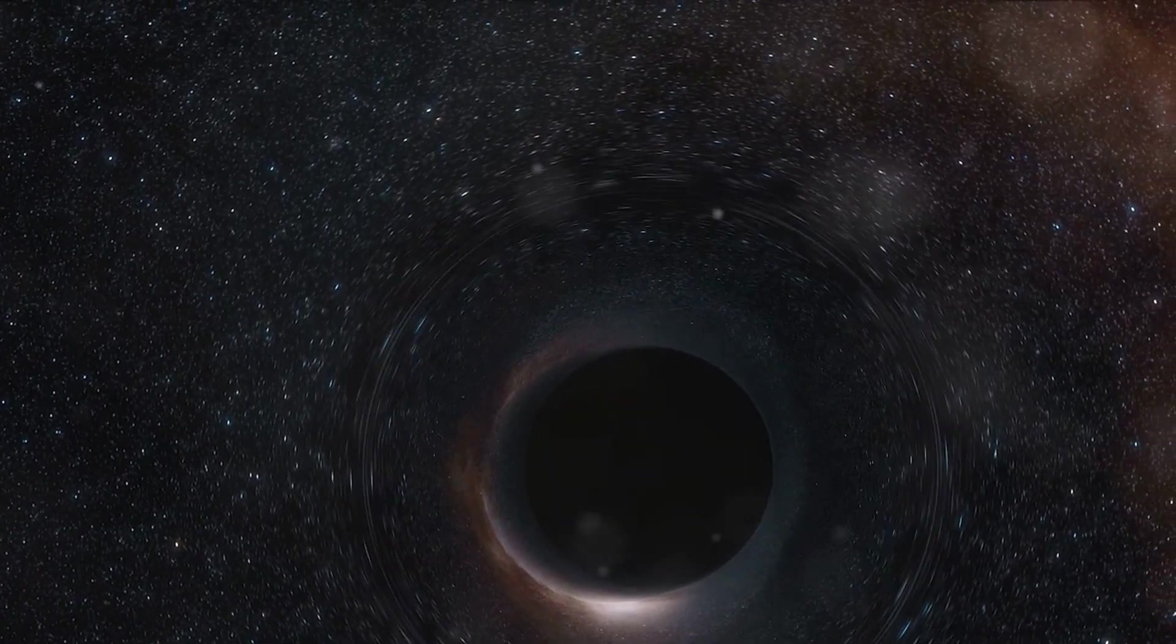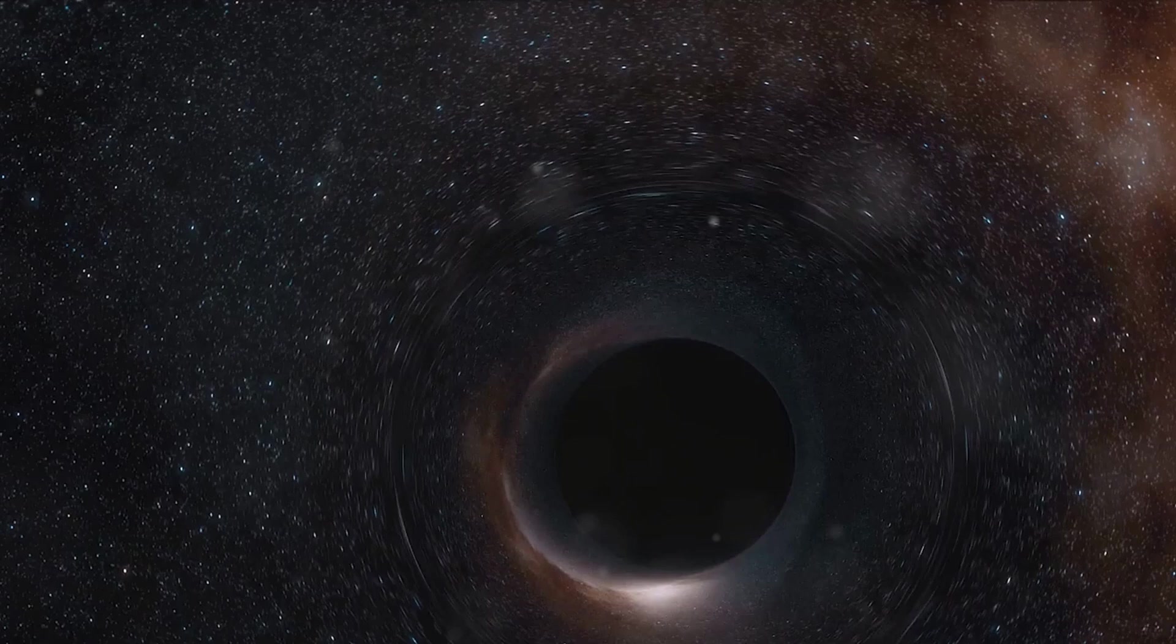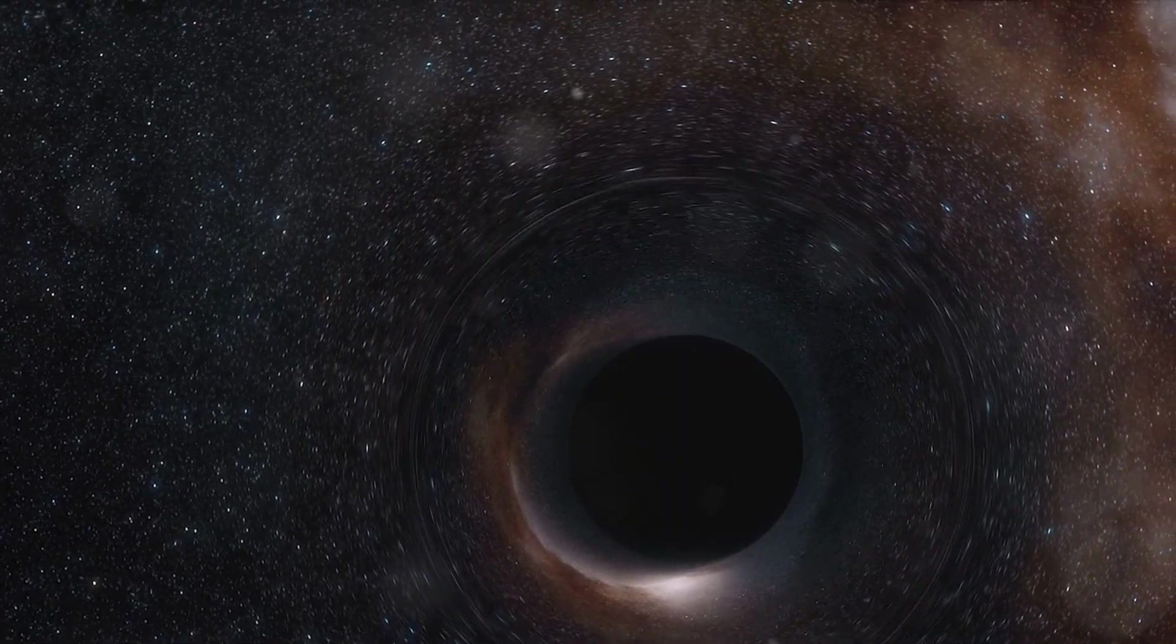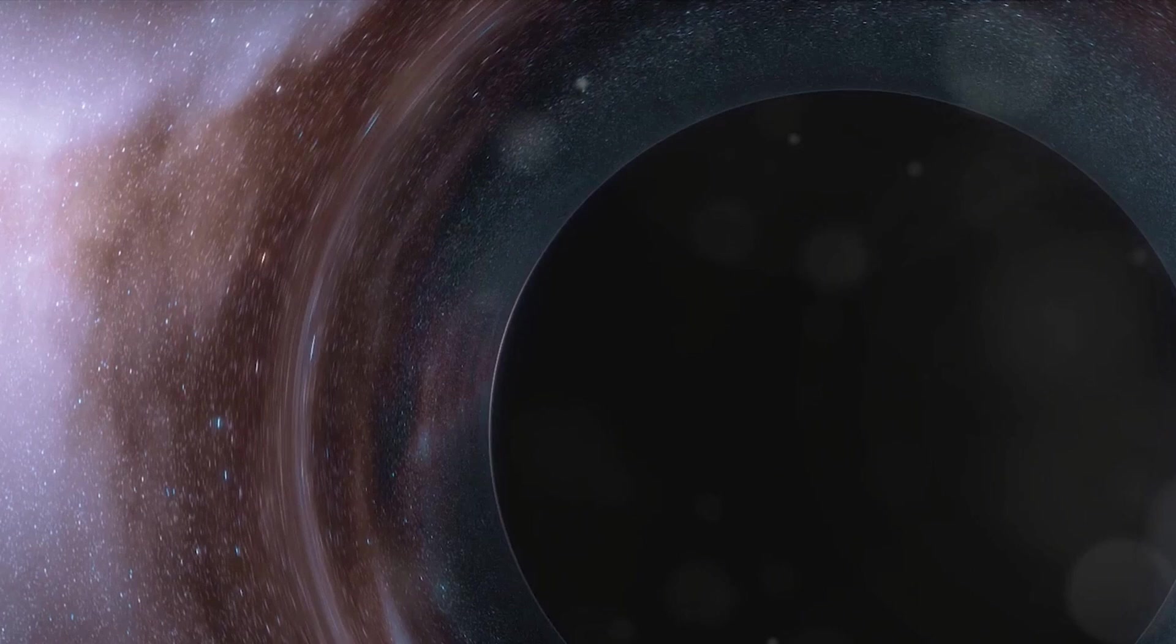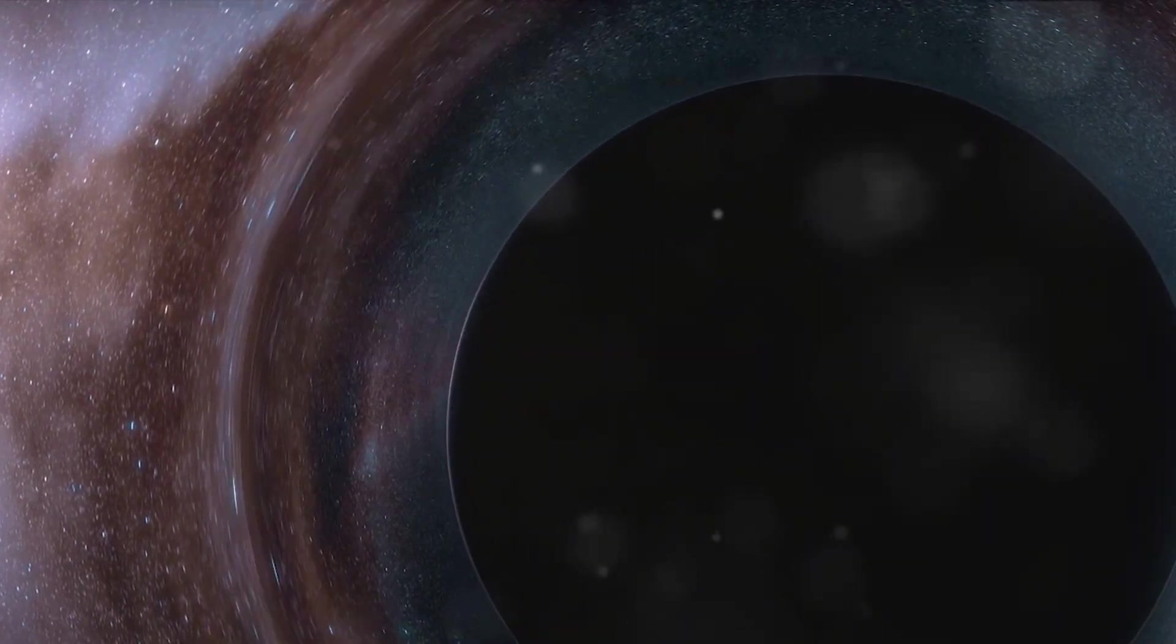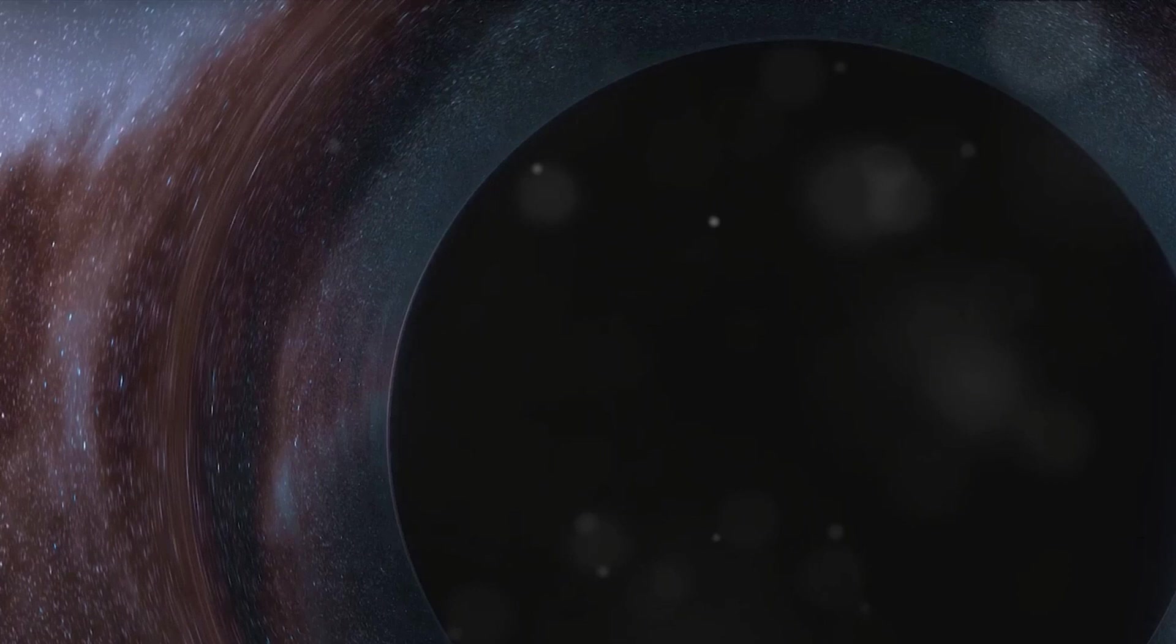Now, to visualize a black hole, imagine the fabric of space as a rubber sheet. When a heavy object, say a bowling ball, is placed on the sheet, it causes a depression or a curve in the sheet. This is a simplified model of how gravity works, according to Einstein's general theory of relativity.